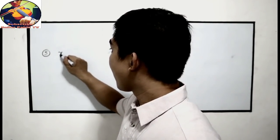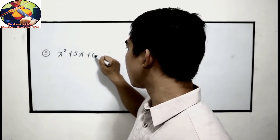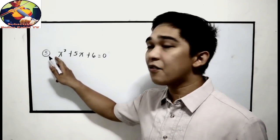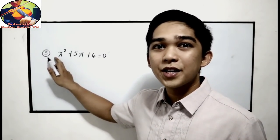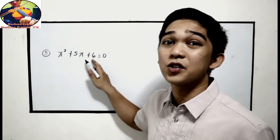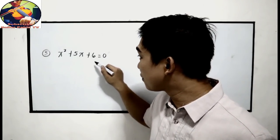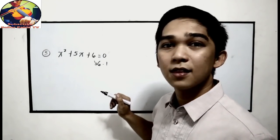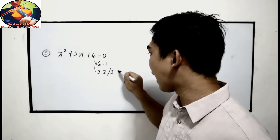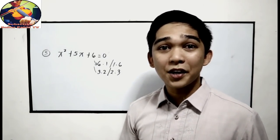Let us proceed to the third kind of factoring: the trinomial in the form x squared plus bx plus c is equal to 0. Let's have an example: x squared plus 5x plus 6 is equal to 0. Since we don't have a coefficient for x squared, we just need to focus on the constant term. In this case we have 6, so find all the factors of 6: 6 times 1, 3 times 2, 2 times 3, or 1 times 6.